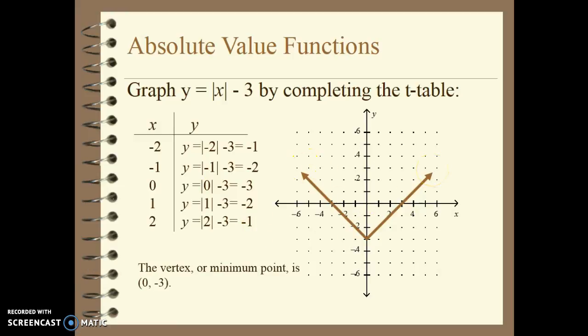The vertex on this absolute value function is the minimum point, and it's at (0, negative 3). It's the minimum because there's nothing below this point on the graph.